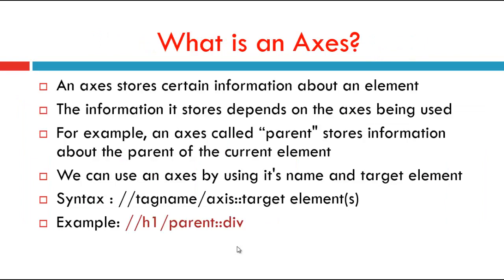Now let's focus on what is an Axis. An Axis stores certain information about an element. An Axis defines a node set relative to the current node, and it defines the tree relationship between the selected node and the current node. For example, an Axis called parent stores the information about the parent of the current element.